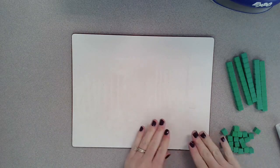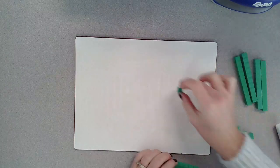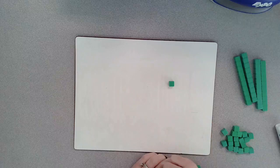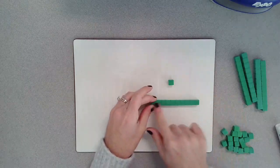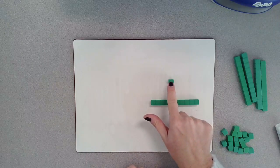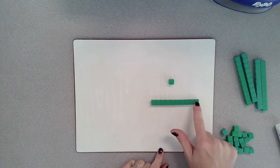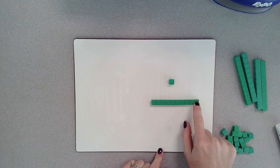Before we get started, let's review our place value blocks so we understand what they're worth or their value. This one is worth one, and this one is actually worth 10. We know that because there are 10 of these in here. So you can think about this 10 block as a full 10 frame.